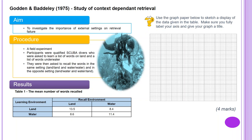The mean number of words recalled: land/land — 13.5; land/water — 8.4; water/land — 8.6; water/water — 11.4.